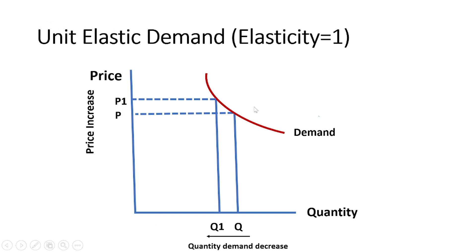In unit elastic demand, elasticity equals 1 because the price change and the responsiveness of quantity demanded are equal. When price increases from P1 to P2, quantity demanded also decreases by the same amount, from Q1 to Q2.